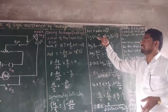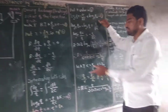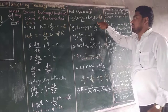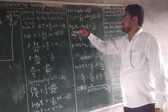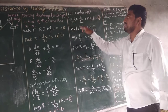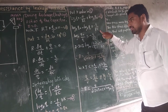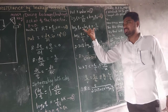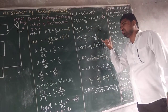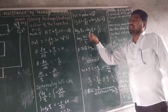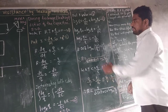Substituting K back into equation 2: log q equals minus t by RC plus log q-naught. This is equation number 3. Rearranging, log q-naught minus log q equals t divided by RC. Using the log property, log(q-naught / q) equals minus t by RC.